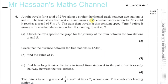Question number 6 from M1, January 2019, IAL paper, Mechanics 1. A train travels for a total of 270 seconds along a straight horizontal track between two stations A and B. The train starts from rest at A and moves with constant acceleration for 60 seconds until it reaches a speed of V meters per second. The train then travels at this constant speed V before it moves with constant deceleration for 30 seconds, coming to rest at B. Sketch a speed-time graph for the journey of the train between the two stations A and B.